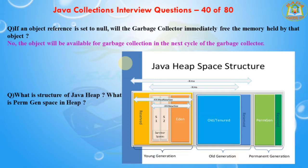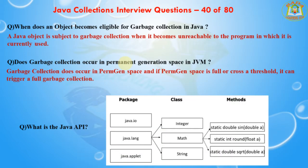The next question is: when does an object become eligible for garbage collection in Java? A Java object is subjected to garbage collection when it becomes unreachable to the program in which it is currently being used.